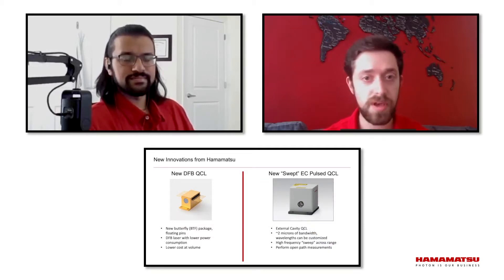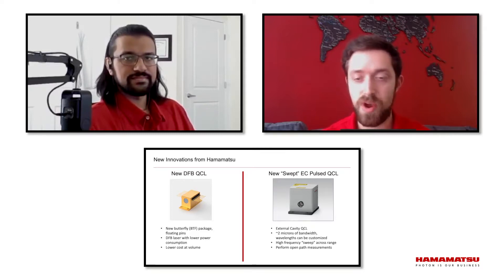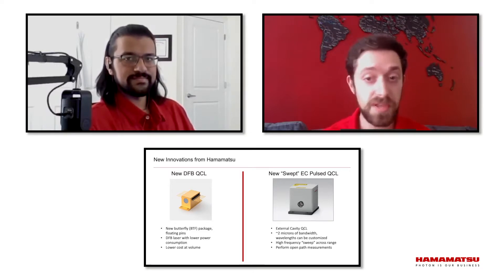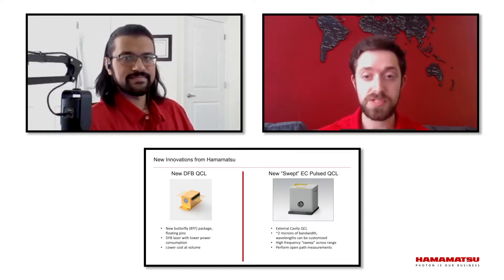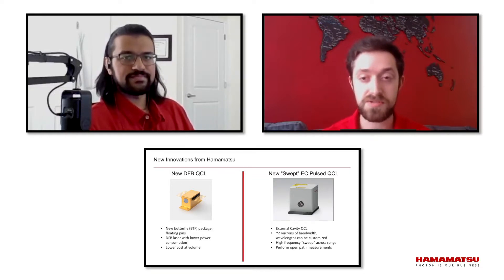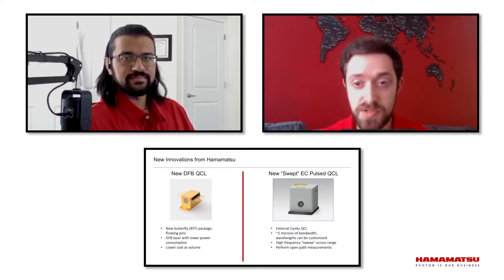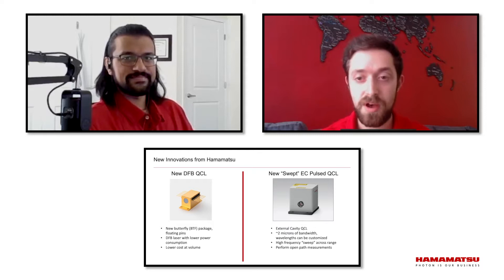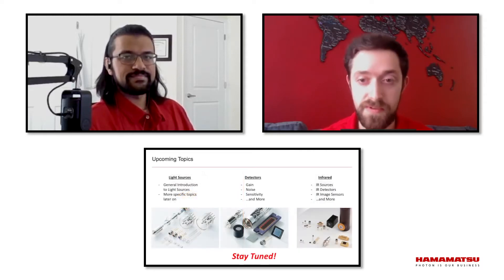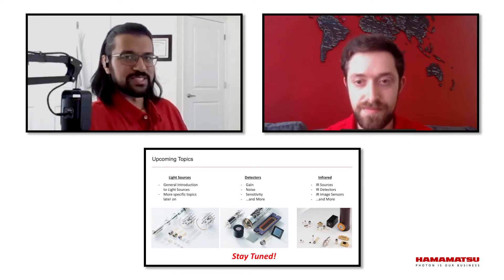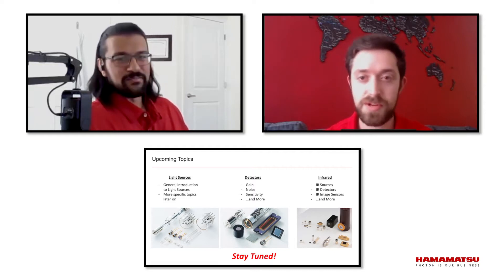However, Hamamatsu has recognized that cost is a driving concern in the market, so we've done a couple of things. We are now offering DFB lasers in traditionally inexpensive HHL packages and a new, smaller, cheaper butterfly package. Also, external cavity lasers have long been very, very expensive, but we now offer a swept QCL that can achieve a 2-micron window — so if you know what wavelengths you're after, this can be a more cost-efficient alternative. More innovations to come, for sure.